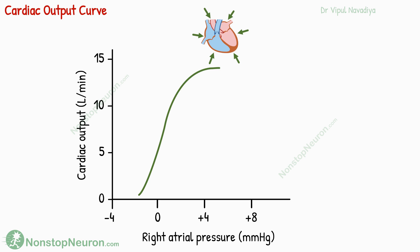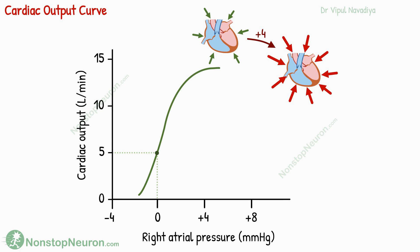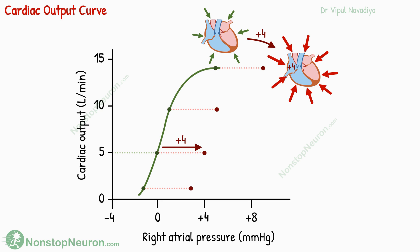This curve represents normal intrapleural pressure, where normal cardiac output is achieved at a right atrial pressure of about 0 mmHg. Now, if intrapleural pressure increases by 4 mmHg, the same filling of the heart chambers would happen at 4 mmHg higher right atrial pressure. So to achieve 5 liters per minute cardiac output, the right atrial pressure needs to be 4 mmHg instead of 0. This applies to all values of cardiac output, so the curve shifts to the right.